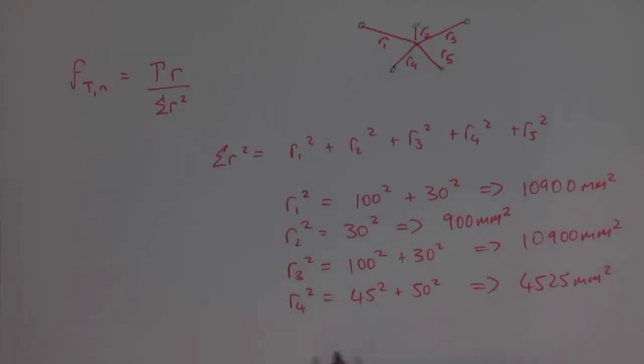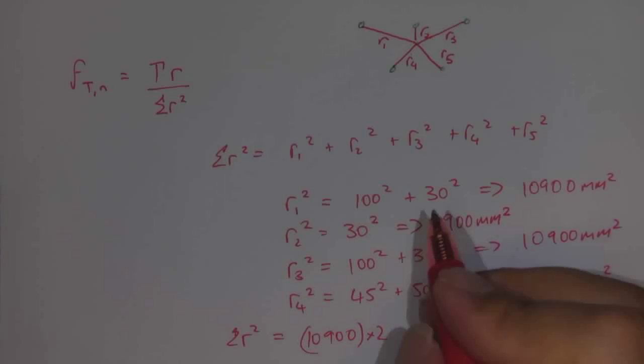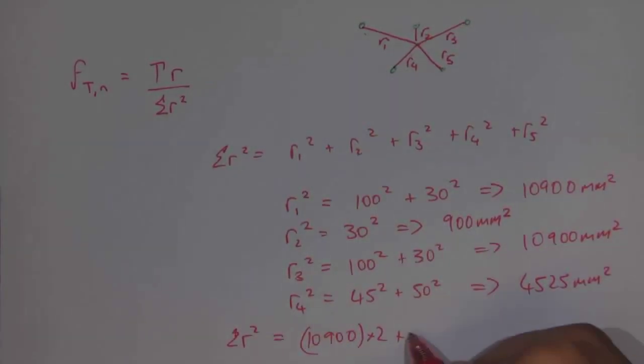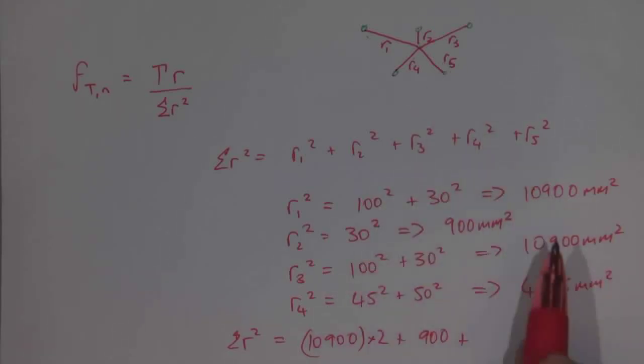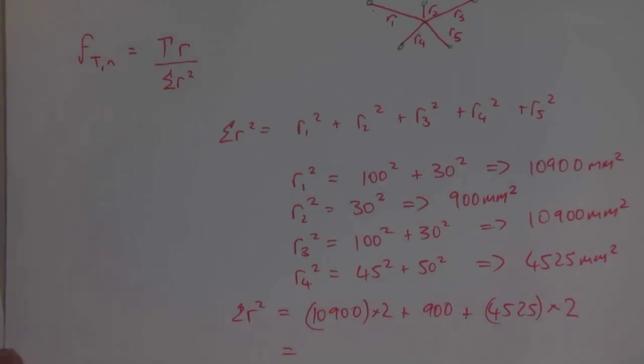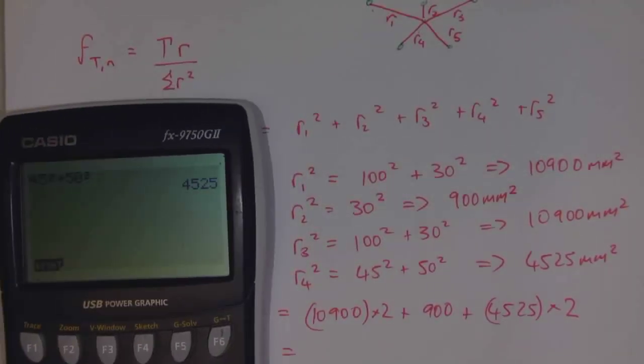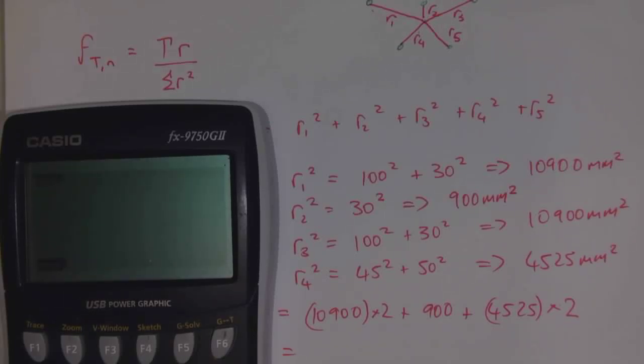From all of those, we can find out the sum of R squared. That will be equal to 10,900, we've got two of those. So R1 and R3, they're the same. R2, which is 900. And then R4 and R5, they're the same. So it's going to be 4,525 plus another 4,525, or I can just multiply by 2.